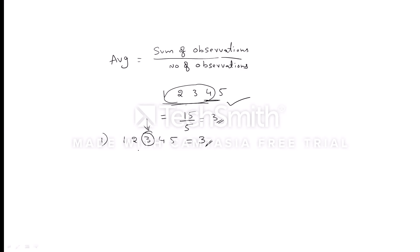Another way to solve average for a consecutive series: average equals first number plus last number divided by 2. So for 1, 2, 3, 4, 5 — first number is 1, last number is 5. 1 plus 5 divided by 2 equals 6 divided by 2, which equals 3.